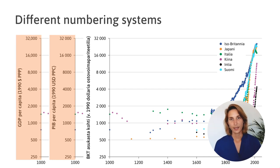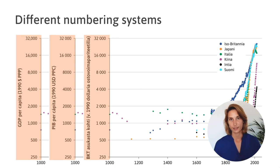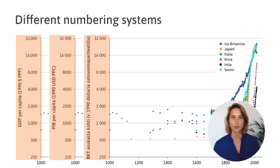Then we have Finnish and here you can see that the thousand separator is a space. So how do we cater for this in the R script?